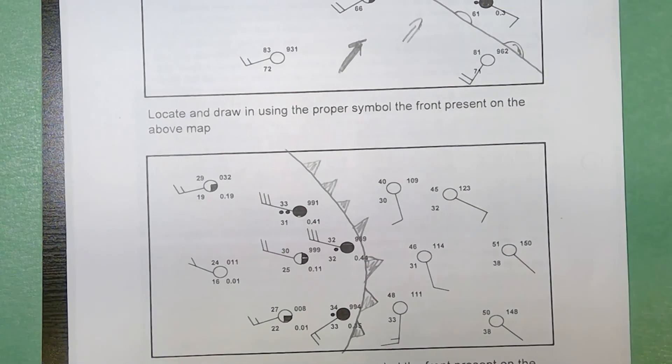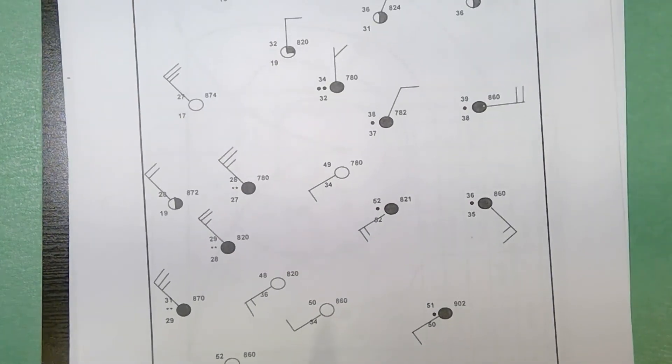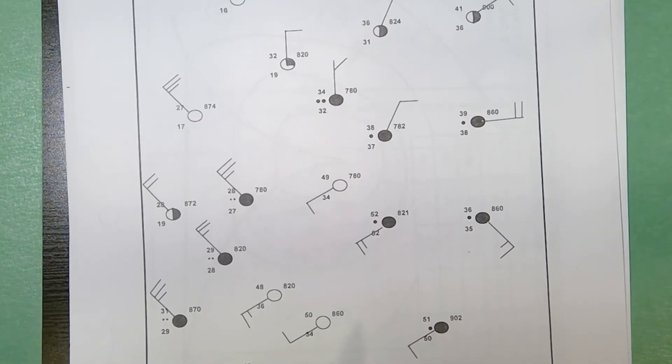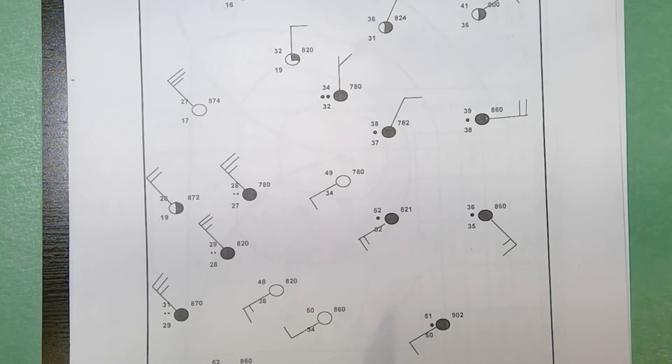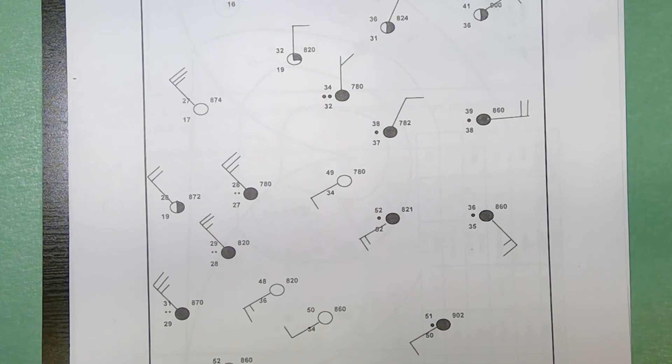All right on to the last map. The last map is showing you a much broader area. You're actually going to have two frontal boundaries in this map. The two frontal boundaries that you're going to find actually intersect. So this is a classic low pressure cyclonic storm system.